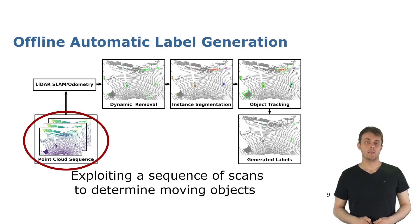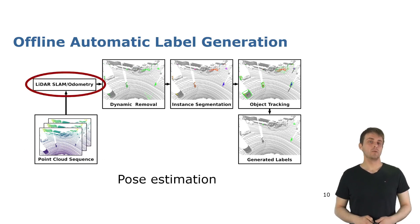We start with a sequence of LiDAR scans and pass these to an odometry or SLAM system. With this we want to get poses or the relative transformation between the scans and these do not need to be perfect. They're just a reasonable guess for the next steps.